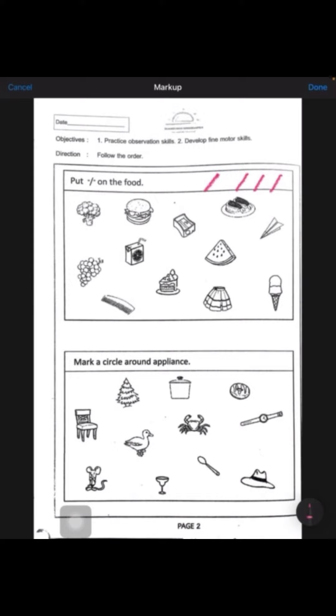I can see a watermelon, so I am going to tick down my watermelon. Now at the bottom of the page it says mark a circle around the appliance. Appliance is something that we use, that we can use for different things. So I am going to show you.